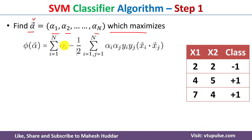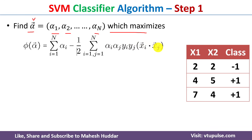The objective function is: phi(alpha) = summation of alpha_i (for i = 1 to N) minus one-half times the summation of alpha_i * alpha_j * y_i * y_j * (x_i · x_j), for all i and j from 1 to N. Here y_i, y_j, x_i, and x_j are known; we need to find the alpha values that maximize this function.